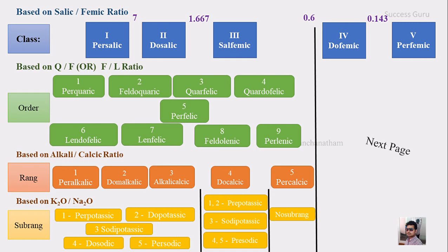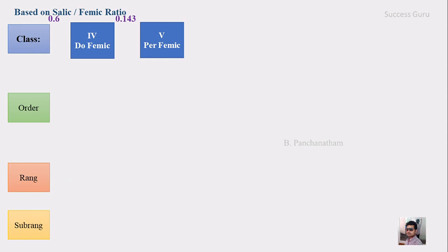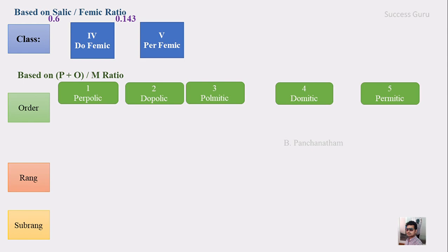Now for class 4 and class 5: the salic-to-femic ratio is 0.6 to 0.143 for class 4, and less than 0.143 for class 5. These two classes together are subdivided into 5 orders based on the P plus O by M ratio. The 5 orders are: per-polic (predominance of folic minerals), do-polic, polymytic, domytic, and per-mytic. If you are in classes 1, 2, or 3, there is no need to do this portion, and if you are in classes 4 or 5, you only follow this sheet.